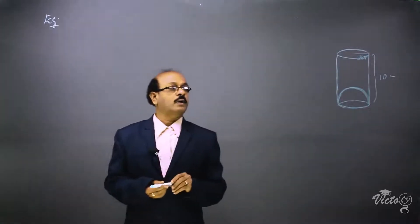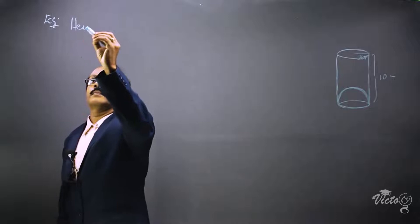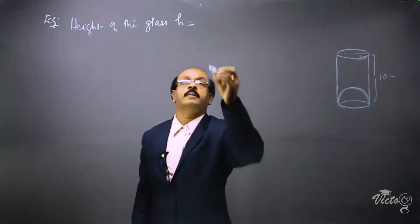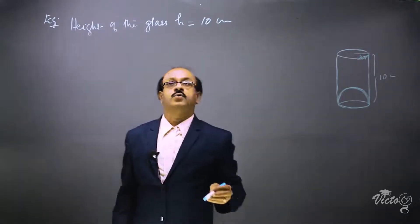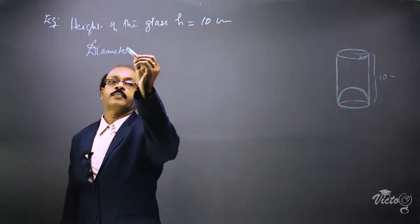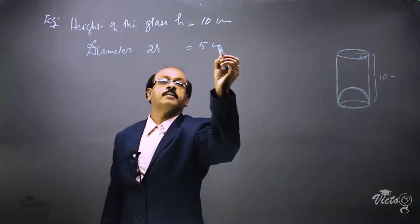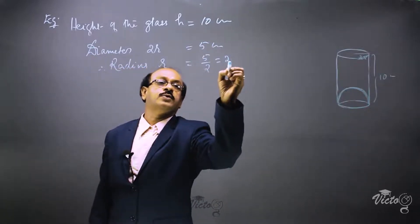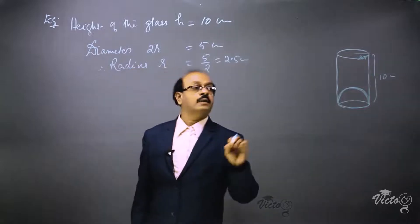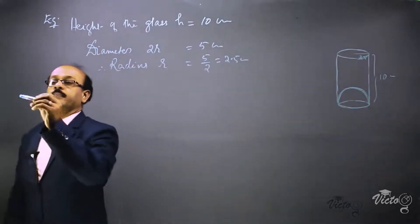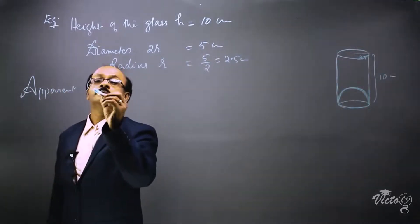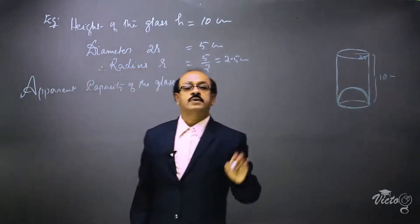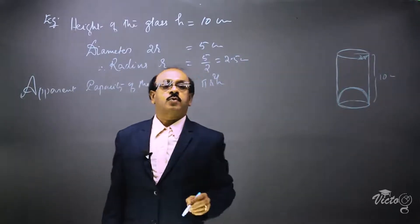The height of the glass h is equal to 10 centimeters. The diameter 2r is equal to 5 centimeters, therefore radius r is equal to 5 divided by 2, which equals 2.5 centimeters. Now we are calculating the apparent capacity of the glass, which is equal to the volume of the cylinder — pi r squared h.